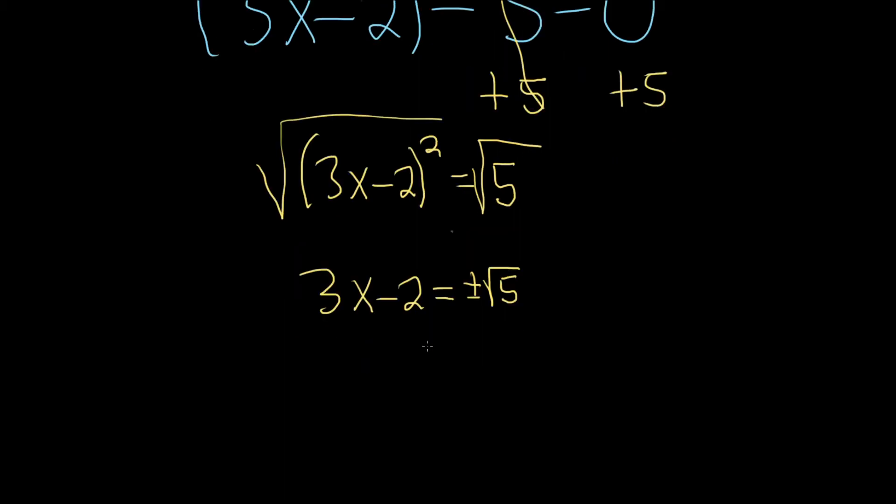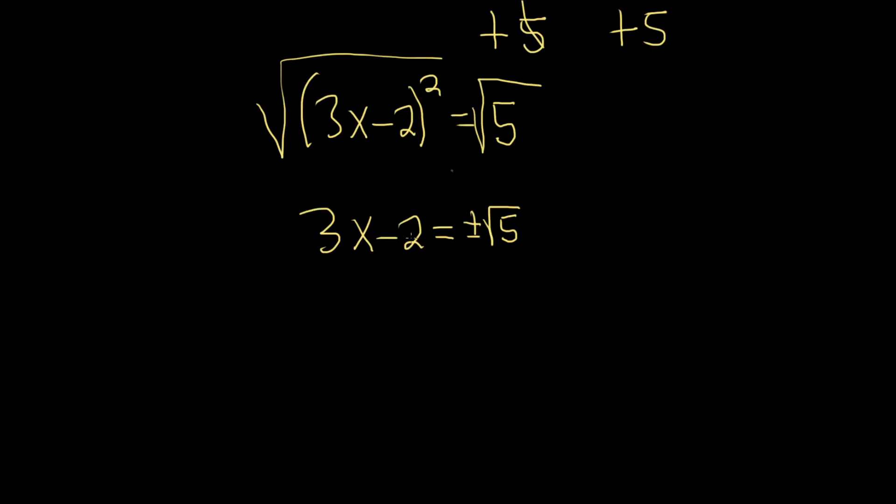We still have to find x, so in the next step, we'll just go ahead and add 2 to both sides. So plus 2, plus 2. That leaves us with 3x equals 2 plus or minus the square root of 5.